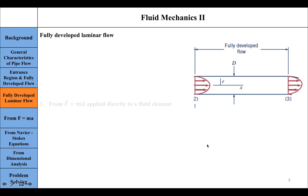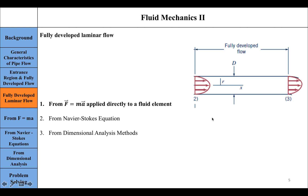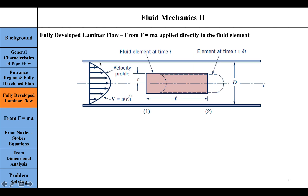There are three ways to study fully developed laminar flow and derive the results: first, applying Newton's second law (F = ma) directly to a fluid element within the pipe; second, through the Navier-Stokes equations; and third, through dimensional analysis methods. We will focus on Newton's second law first. Let's look at a completely horizontal pipe with diameter d.